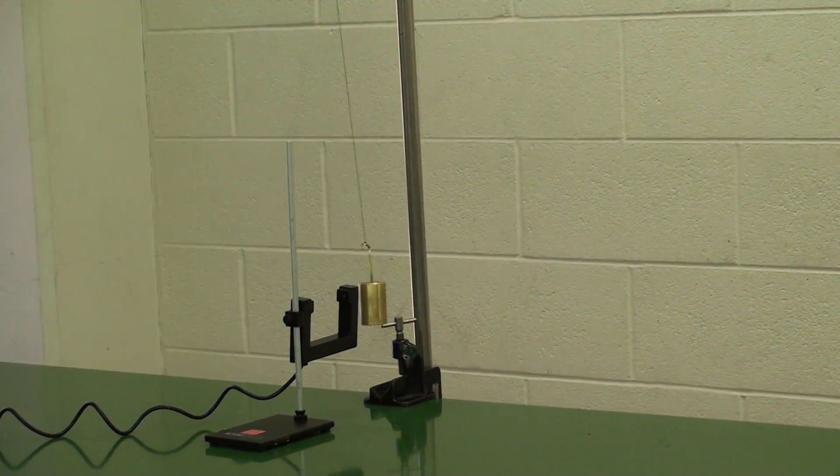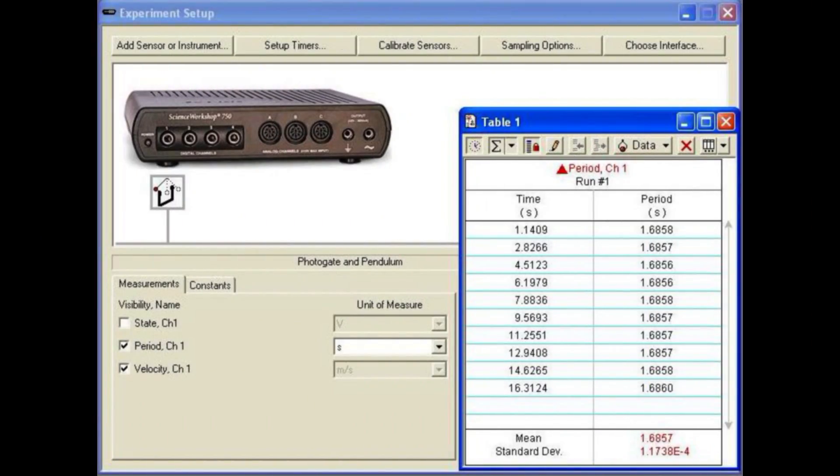Use the photogate to measure the average period for several swings. Record the standard deviation so you know how much error to expect.